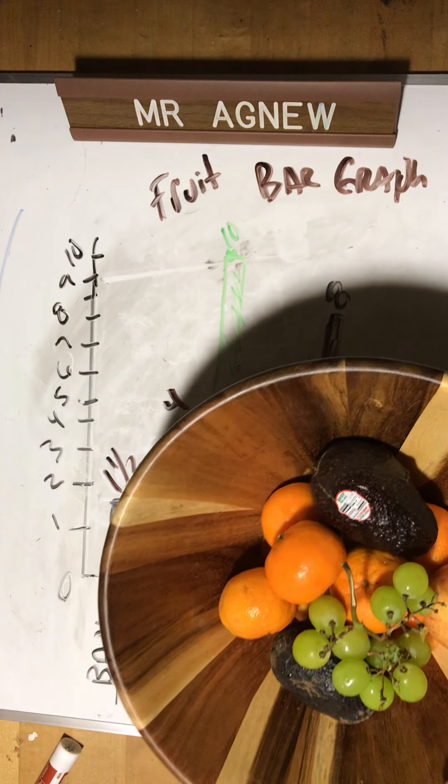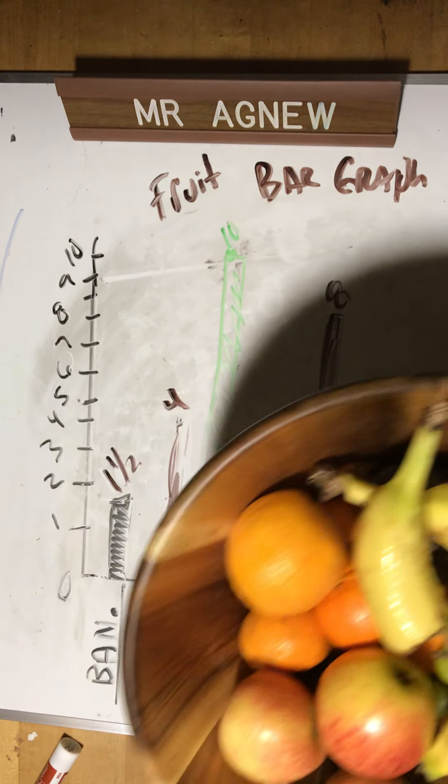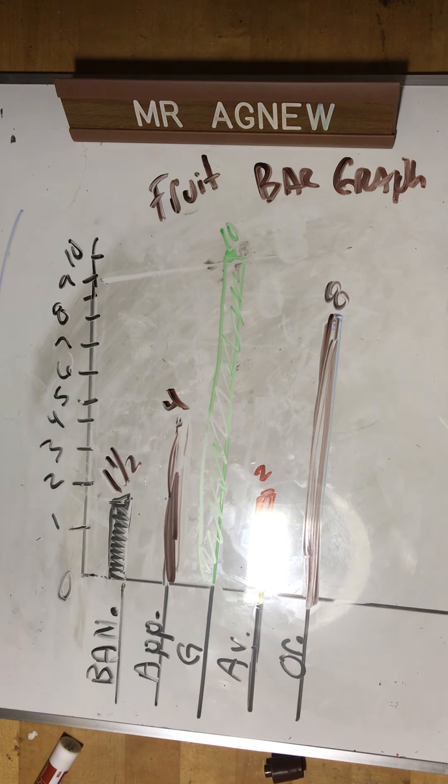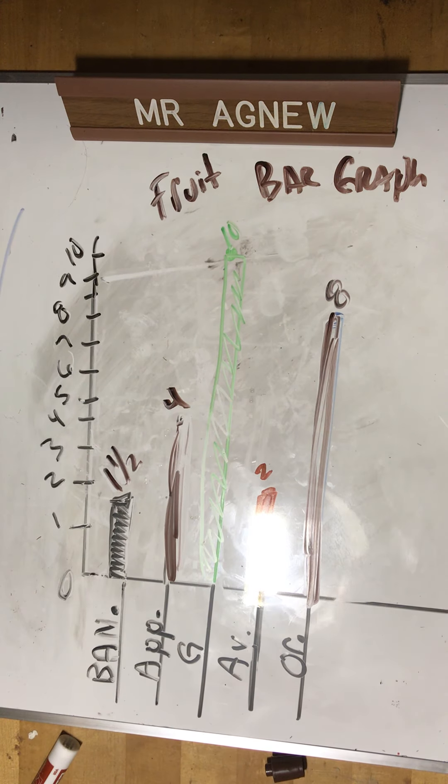Fruit bowl - you can do it really with anything in your house. You can do it with legos, you can do it with colors, you can do it with whatever you'd like. But there's my fruit bowl bar graph. Cool. Awesome, that's one of the activities. I got another one coming up.